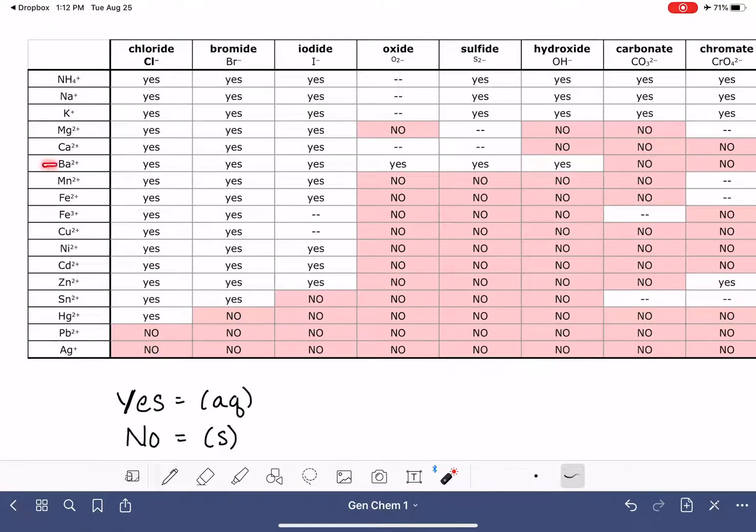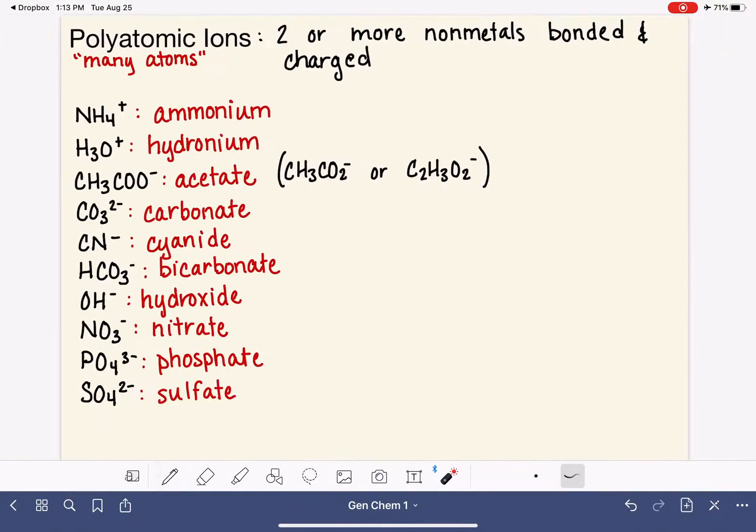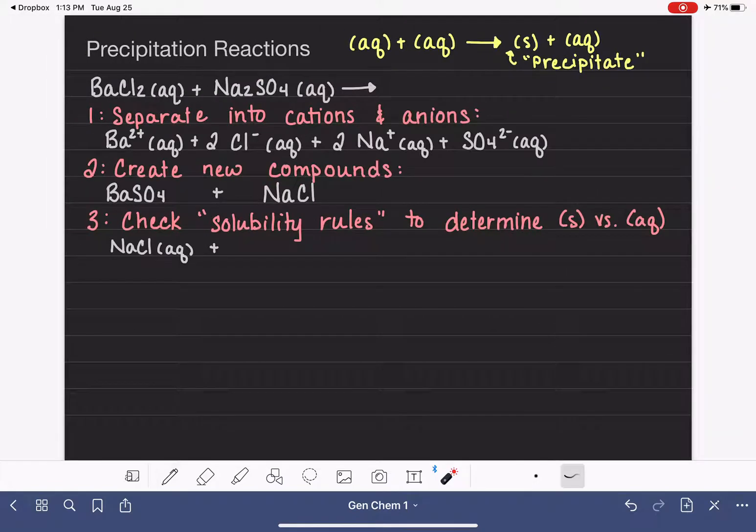So let's go back to the solubility rules, and let's look for BaSO4 and see what it is. First we find our barium, which is right here, and now we are looking for the sulfate ion, which looks like I'm going to have to scroll a bit. Here it is, and we see that this is a no. So that means that BaSO4 is not soluble in water. It is our solid. So we have successfully predicted the products of this particular reaction.